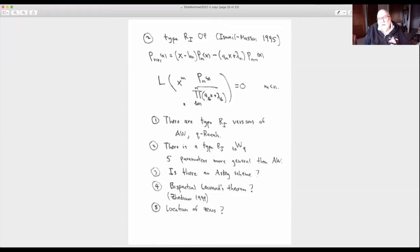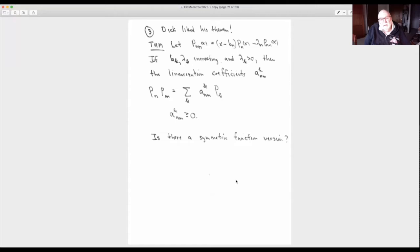Well, there are type R1 versions of Askey-Wilson and Q-Racah polynomials. Those do exist. In fact, maybe there's a type R1 version of Macdonald polynomials. There's a type R1 version of something better than the Askey-Wilson. It has five parameters. And the measure has five things in the denominator, one in the top. And it's a 10W9. Is there something better for the Macdonald polynomials? I don't know. An Askey scheme for these type R1 polynomials.